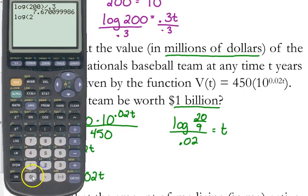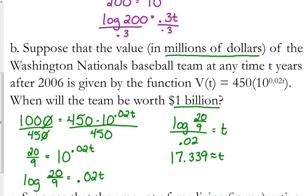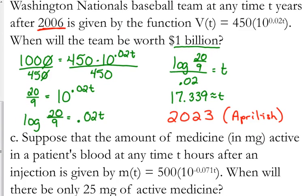So let's type that in. The log of 20 over 9, make sure you close the parentheses, divided by 0.02 is 17.339. And in the context of this problem, it's t years after 2006, so that would be sometime in the year 2023. About a third of the year, so about April. So if you want to get technical about it, April-ish 2023.